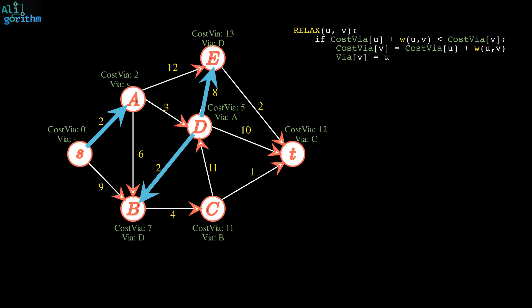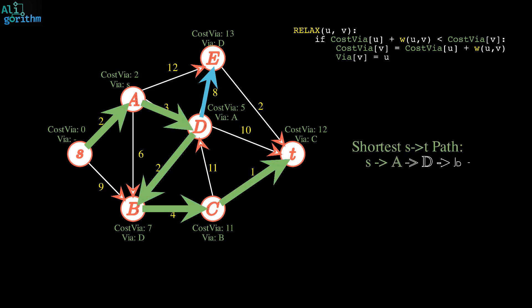By the end of the algorithm, if we trace back each vertex using its via value, we notice that we have formed a tree. This is called a shortest path tree, and it encodes the shortest path from S to each vertex in the graph. In particular, we can trace out the shortest path from S to T here in green, which is S, A, D, B, C, and T.